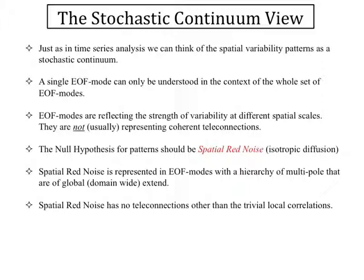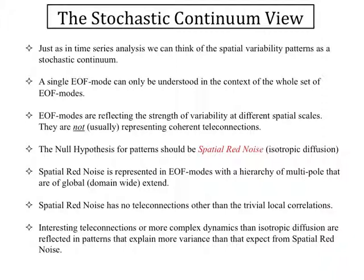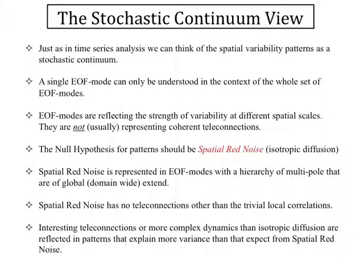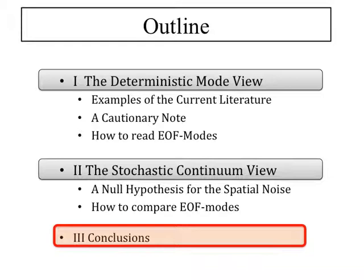This stochastic view is the more efficient way of looking at the data. You can of course also take the deterministic view — both are possible. You are more likely to fall into the trap of imagining spurious teleconnections with the deterministic view. On the other hand, with the stochastic continuum view you would think everything is noise. In conclusion, principal component analysis is a very sophisticated trick, but you might lose the ball — it's very likely you end up thinking about teleconnections that are non-existing. So be careful when applying this.